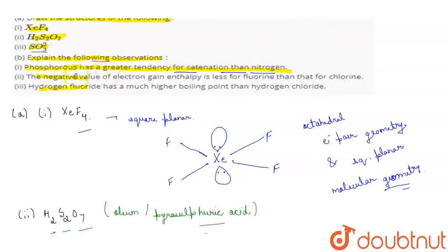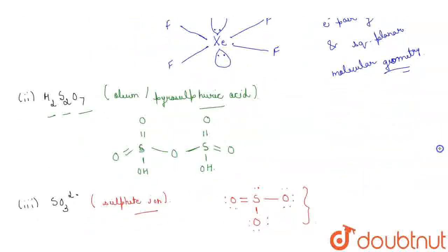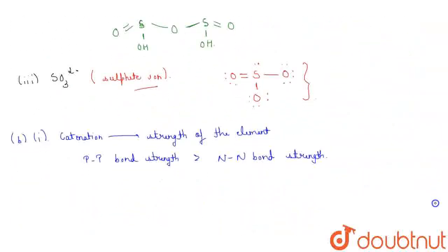Moving to the second observation. The negative value of electron gain enthalpy is less for fluorine than that for chlorine. So basically, the electron gain enthalpy of fluorine is less negative than that of chlorine because of the small size of the fluorine atom. Clear?